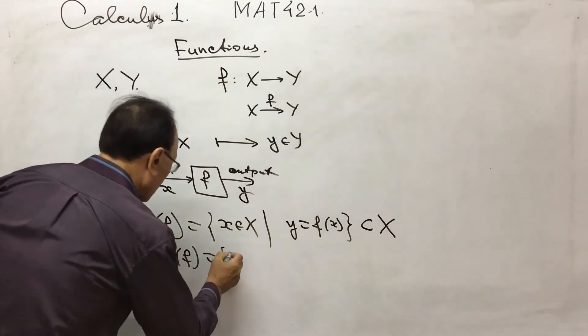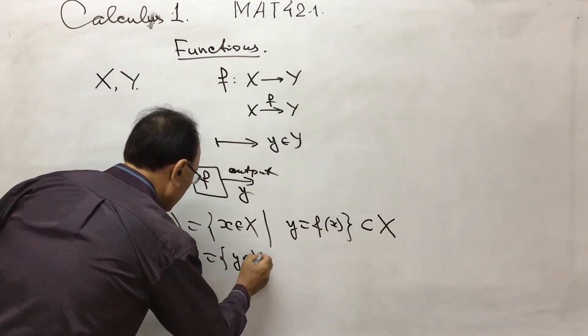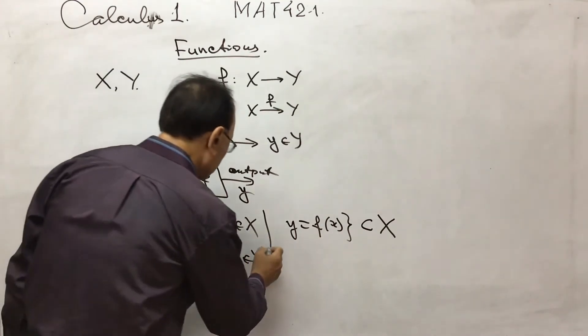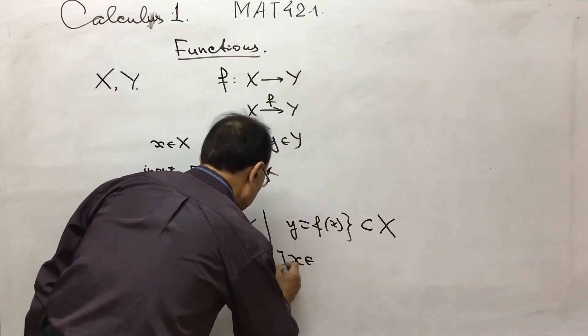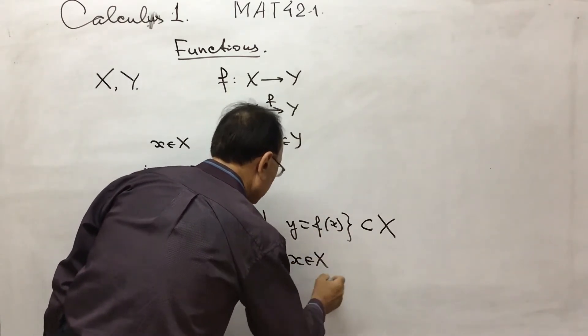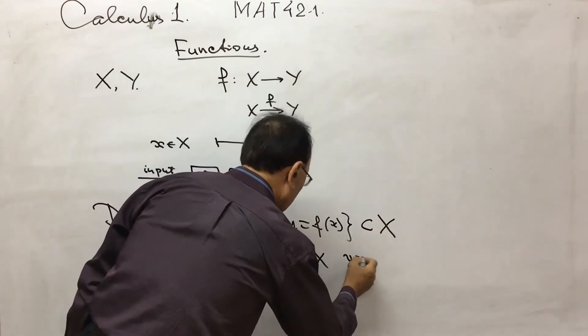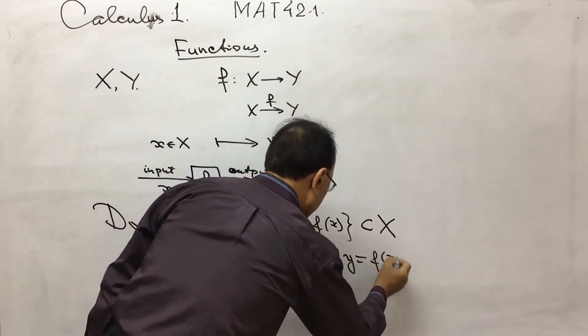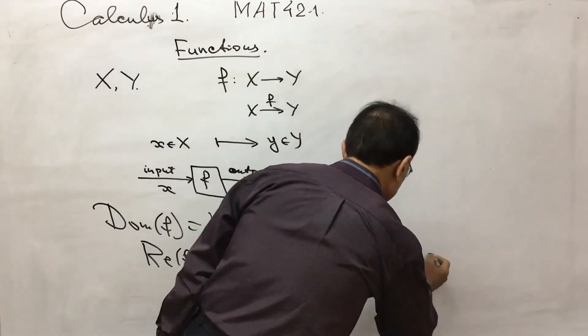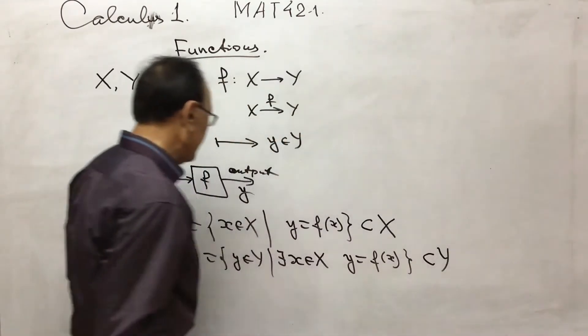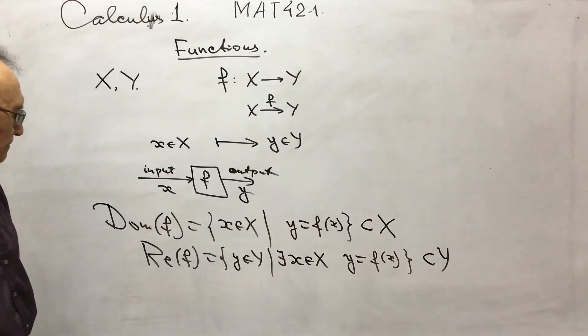There is a range of f. This is those elements of y, such that there exists x from x, where y is f of x. This is the range. And definitely subset of y. So this is the domain and the range of the function.